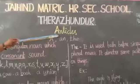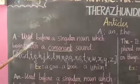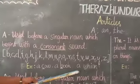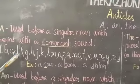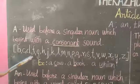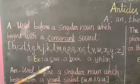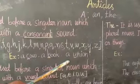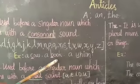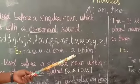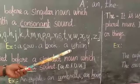A and An. First, A. A is used before a singular noun which begins with a consonant sound. Examples: a cow, a book, a union. Even though this word starts with vowel U, it produces a consonant sound, so we put A before union.